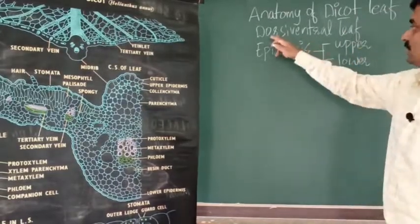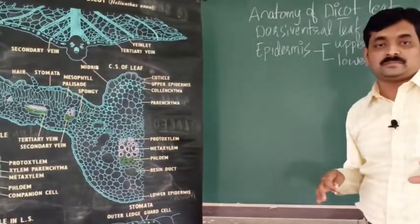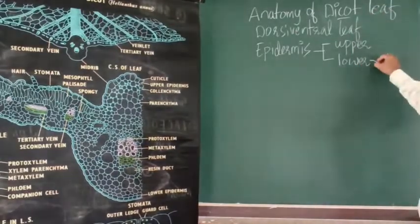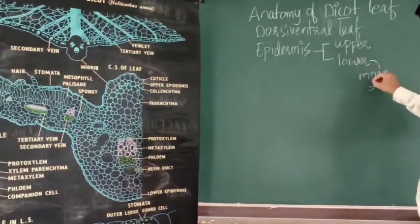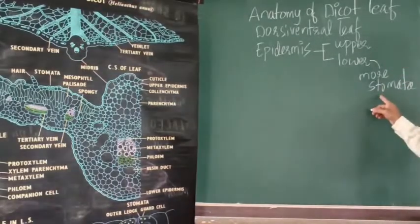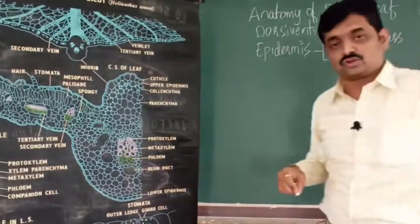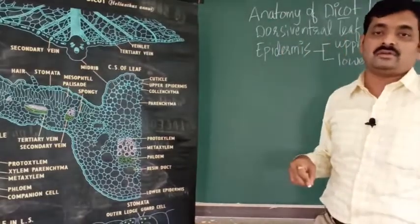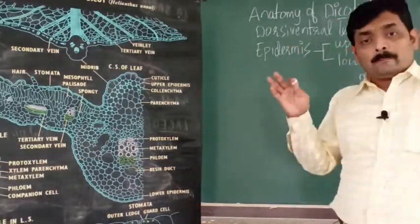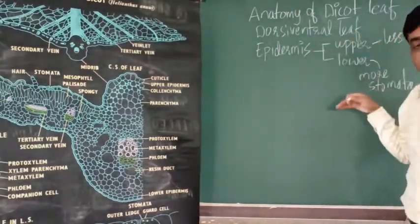The stomata found on the epidermis are not equally distributed. More stomata are present on the lower epidermis and fewer on the upper epidermis. Stomata are involved in transpiration — that is, loss of water through leaves.